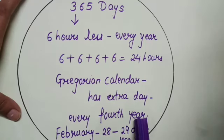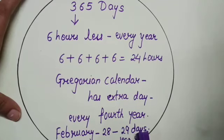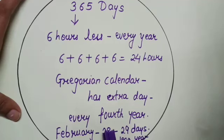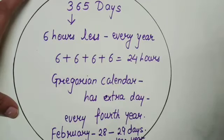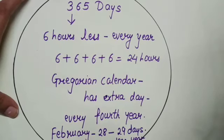In a leap year, February has 29 days instead of 28 days. That means the year has 366 days, and that year is called a leap year. Let's understand this with an example.